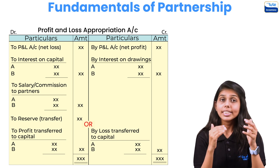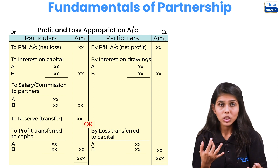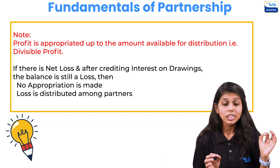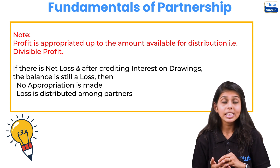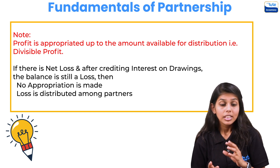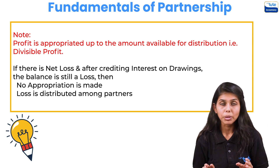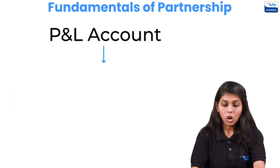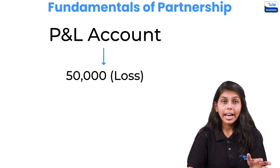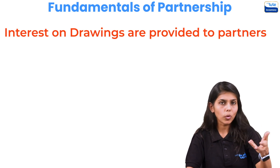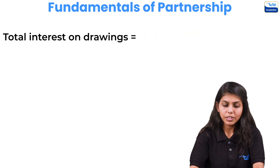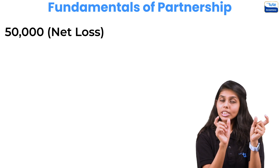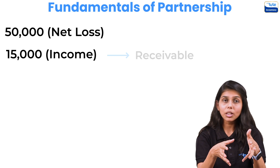The profit earned by the firm is distributed between partners in the form of salary, interest on capital, and finally in the profit sharing ratio. Importantly, profit is appropriated only up to the amount available for distribution — that is, the divisible profit. For example, if from the P&L account there is a net loss of fifty thousand, and the total interest on drawings is fifteen thousand, then the net loss reduces to thirty-five thousand after crediting that income.